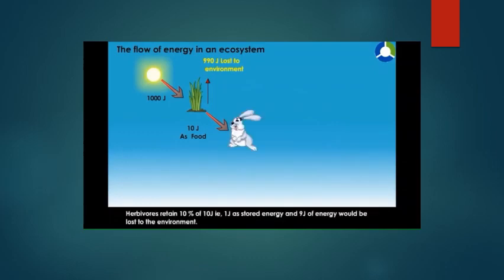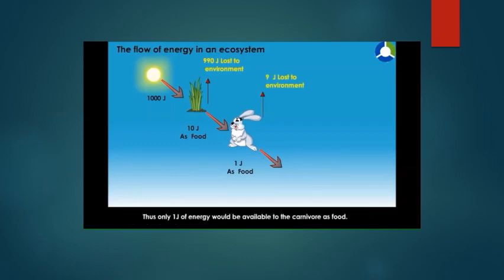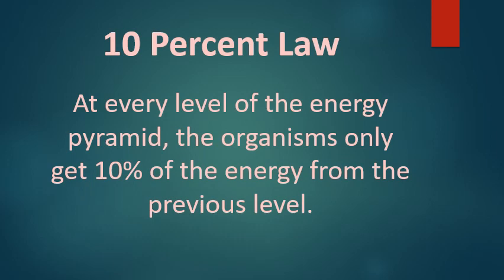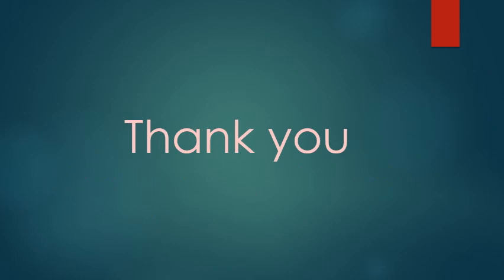Herbivores retain 10 percent of 10 joules, that is 1 joule, as stored energy, and 9 joules of energy would be lost to the environment. Thus only 1 joule of energy would be available to the carnivore as food. So children, now you understand why at every level of the pyramid the organisms only get 10 percent of the energy from the previous level — this is called the 10 percent law of energy. Thank you children.